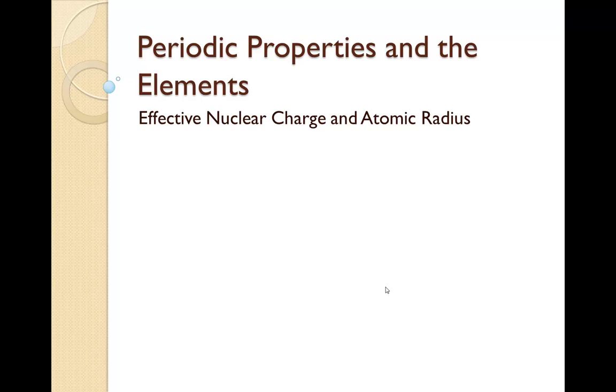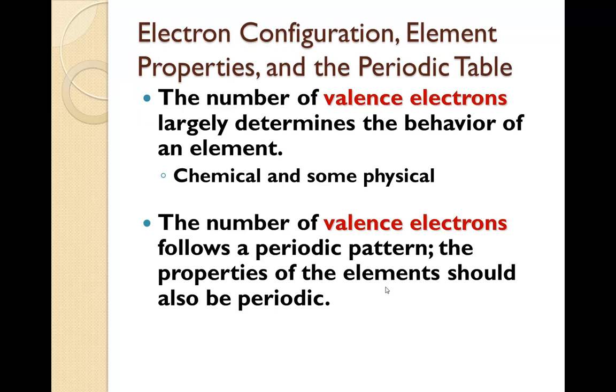In this tutorial, we will be discussing the effect of nuclear charge and its effect on the atomic radius. Electron configuration, element properties, and the periodic table. The number of valence electrons largely determines the behavior of an element. This includes both chemical and physical properties.